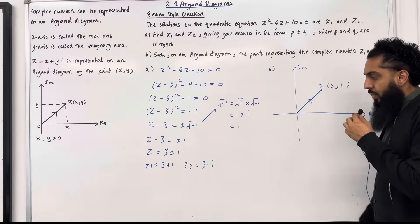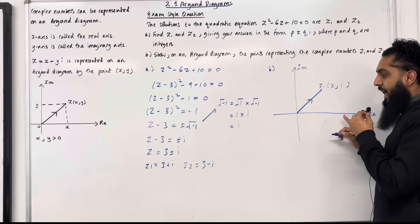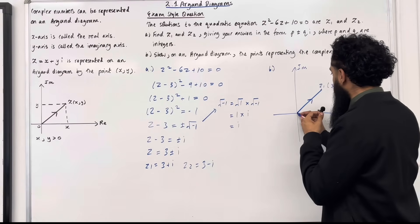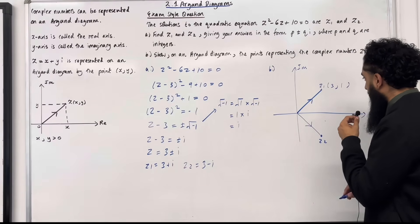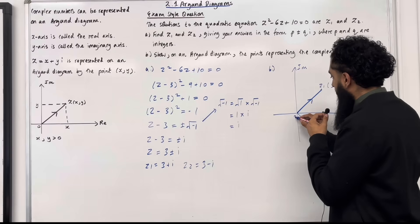Then I've got z₂ which is 3 - i. So I've got 3 along the real axis and negative 1 along the imaginary axis. My z₂ will look something like this. This one here is my z₂ represented by the point (3, -1). This is the origin.